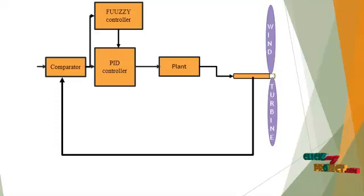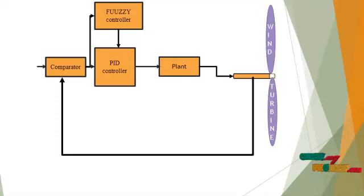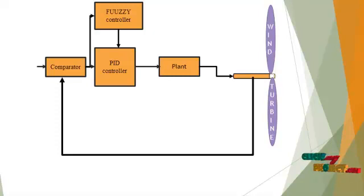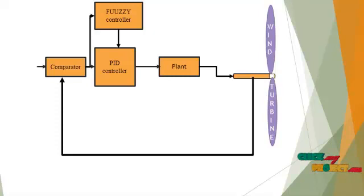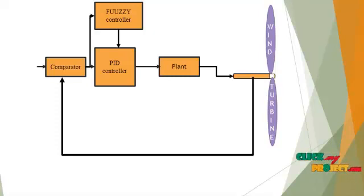There are four main blocks: the comparator, the PID controller, the fuzzy controller, and the plant. The plant consists of the turbine, wind generator, and the overall wind turbine controller. The output wind speed signal is compared in the main comparator, fed into the PID controller, then compared with the fuzzy logic controller, and then fed into the plant.